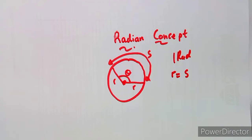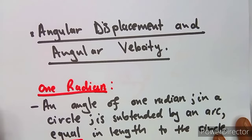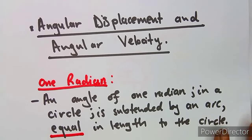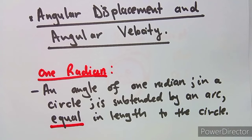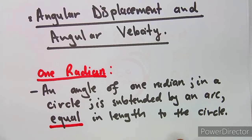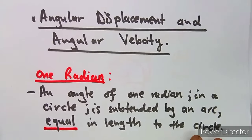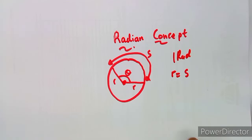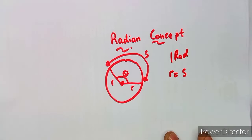I want you to know this: one radian is defined as an angle subtended at the centre of a circle by an arc equal in length to the radius. So the radius should be equal to the arc length — that is what I'm talking about.